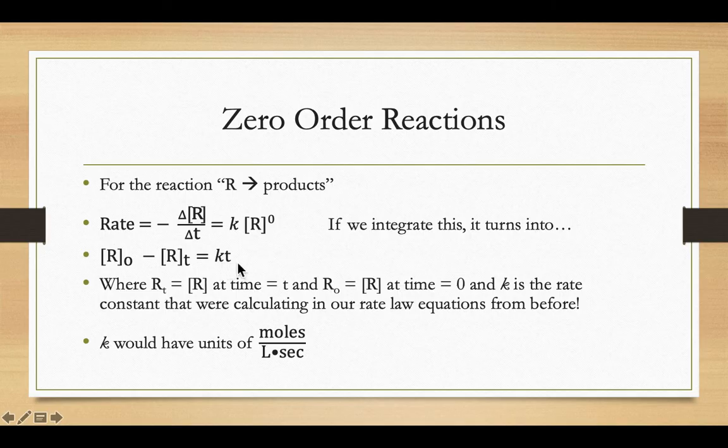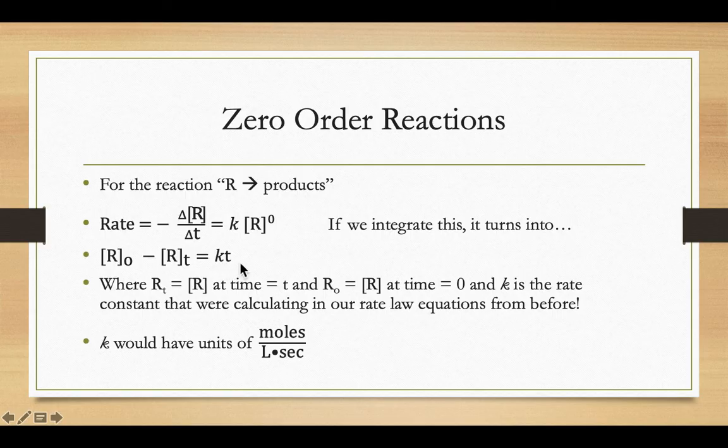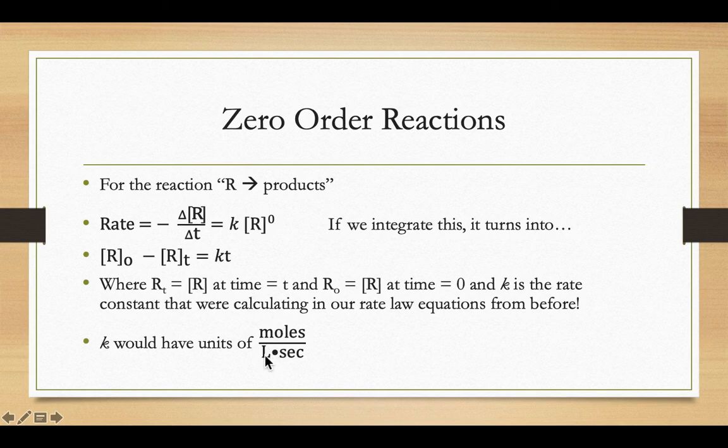If you wanted to, you could figure out what the units are of that K by dividing. To get the K by itself, you'd have to divide both sides by time. And so our molarity, moles per liter over time, for those zero-order reactions.